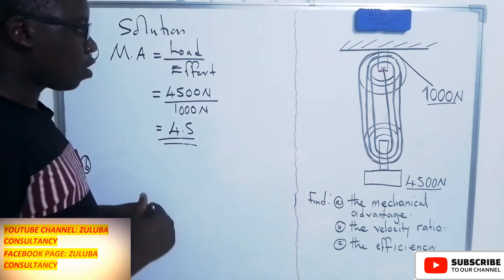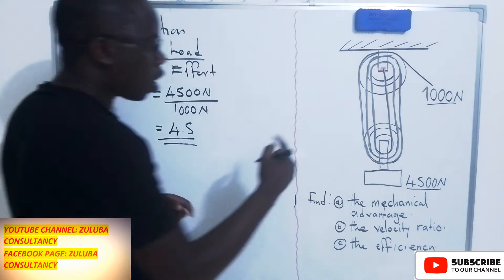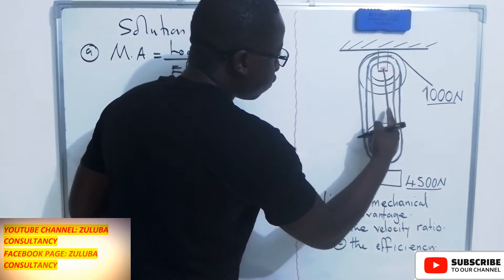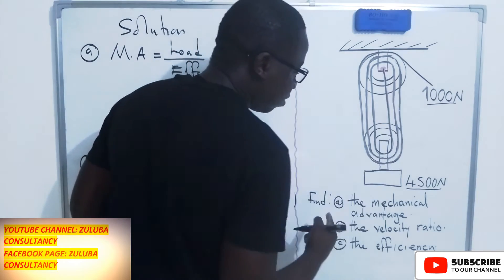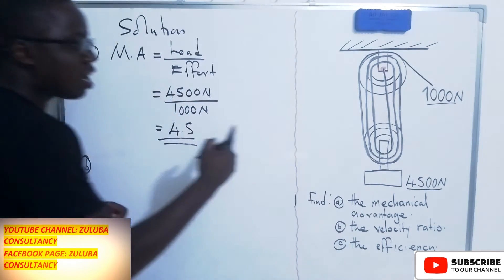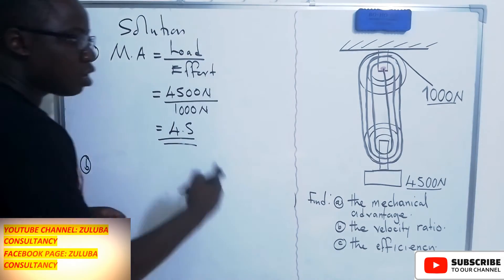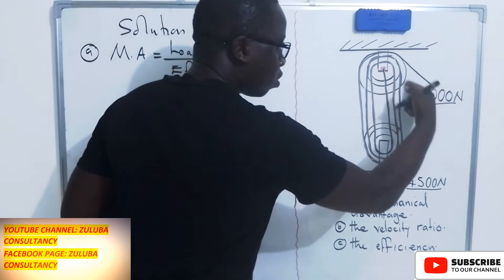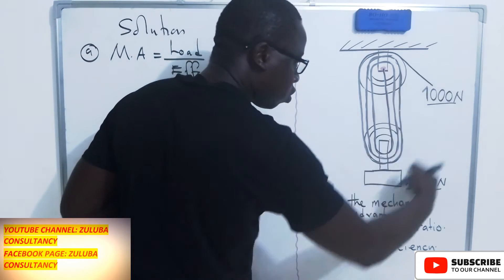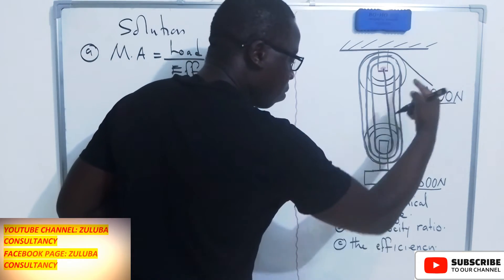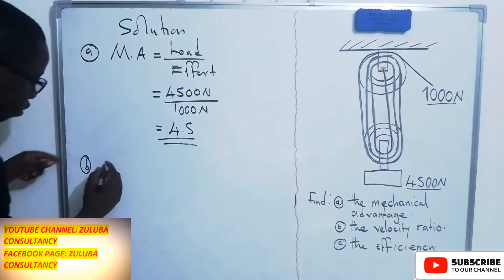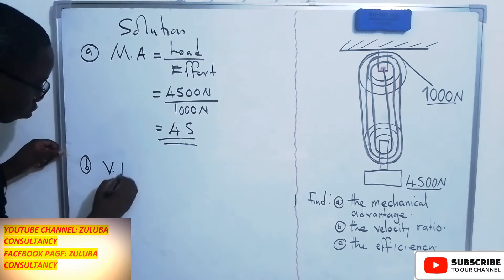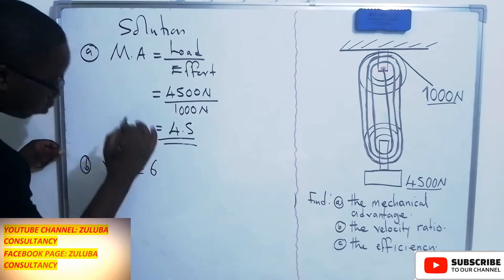In this case, we have 1, 2, 3, 4, 5, 6 lines that are connected to the moving pulley. We are not going to count the last line because it is not connected to the moving pulley. So we have a velocity ratio of 6.